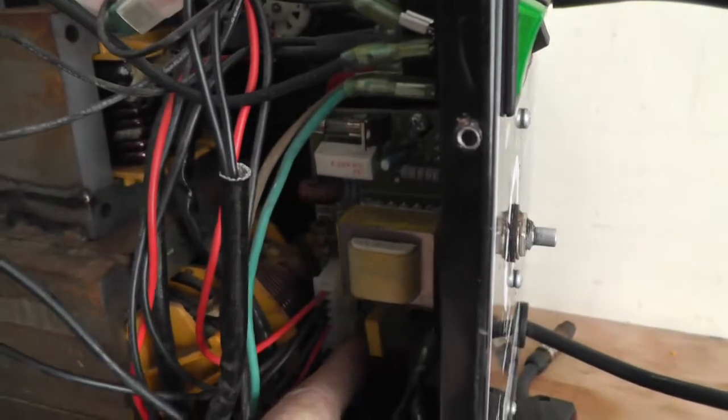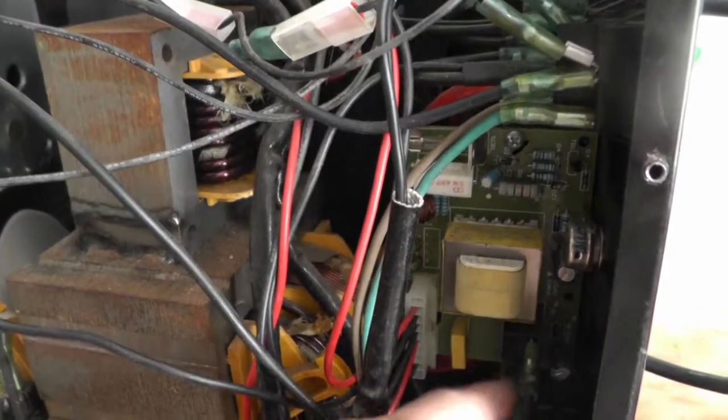Right, I'm going to take this circuit board out of here. First of all I'm going to undo these connections. I can't pull these off for some reason. I don't want to damage the board so I'll try and get them off when I pull it out.